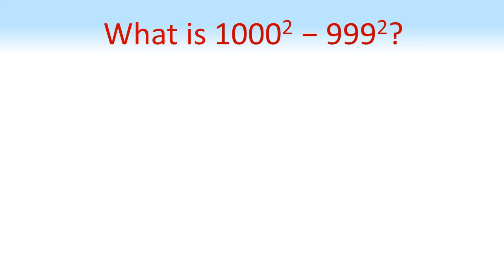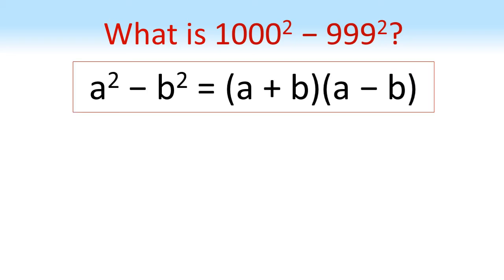Now we can use the difference of two squares to very quickly find the answer to sums such as this one, a thousand squared minus 999 squared. So here's our rule.